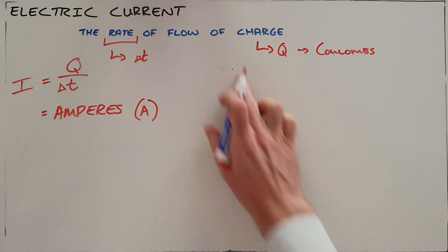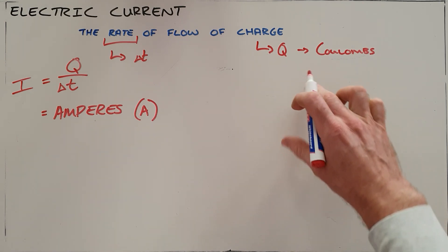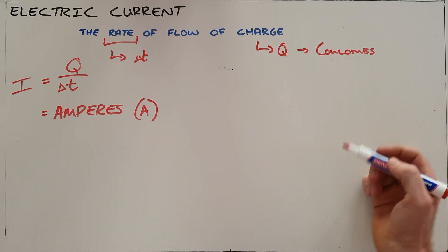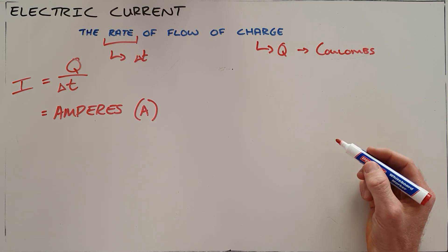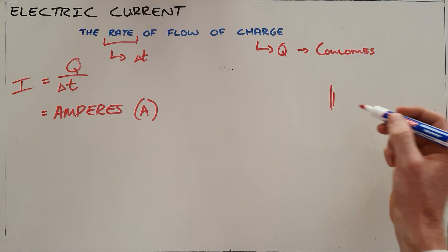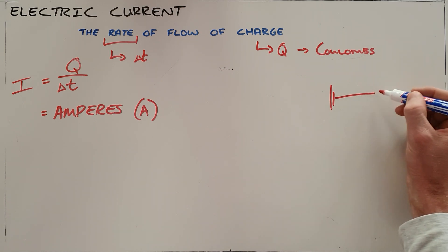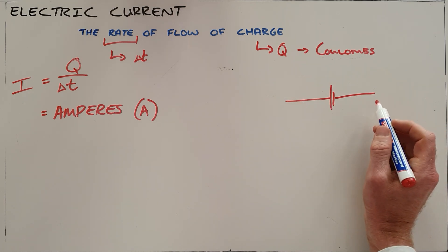In order for current to flow in a circuit - we're talking about moving charge - two things are required. The first is a power source. There needs to be something that is pushing or encouraging the charge to move through the conductors.